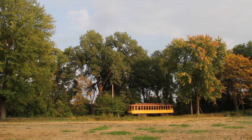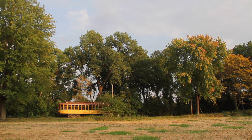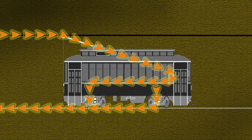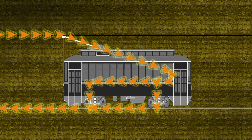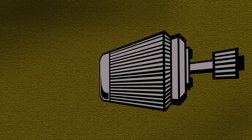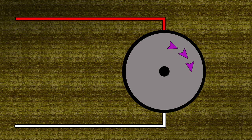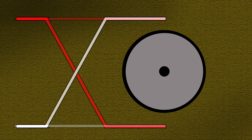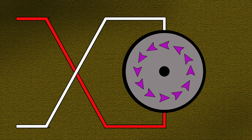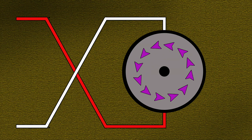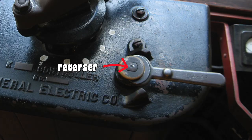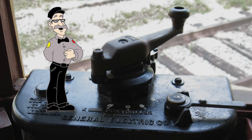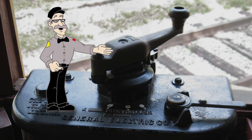What about streetcars? Streetcars are powered by direct current, which flows in one direction. As the current passes through an electric motor, it causes the motor's armature to turn. If we change the direction the current flows through the motor, the motor will turn the other way. That small reversal handle on the controller switches the position of the two wires carrying electricity to the motors. Reverser is a good name for it — it reverses the flow of electric current through part of the motors.